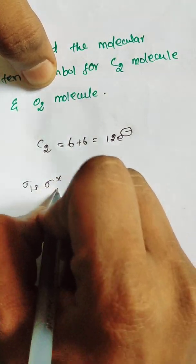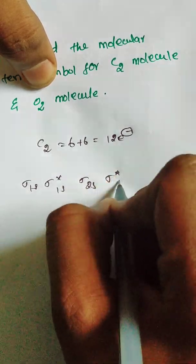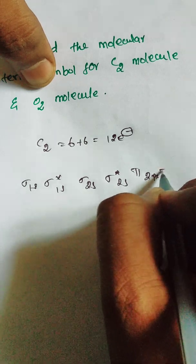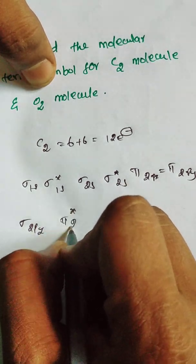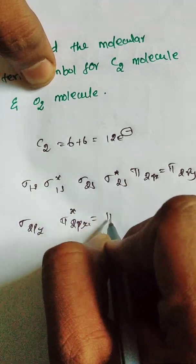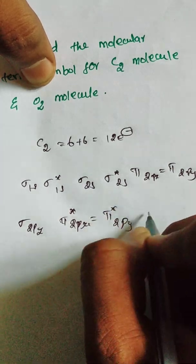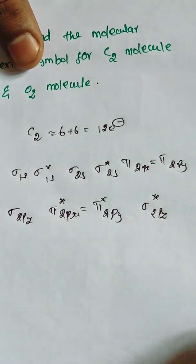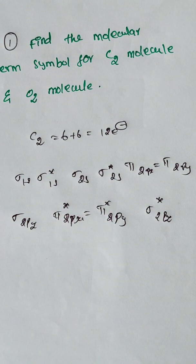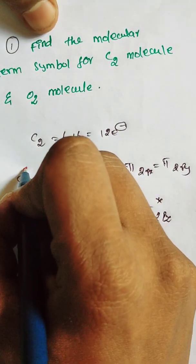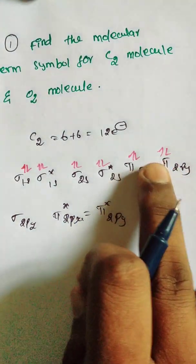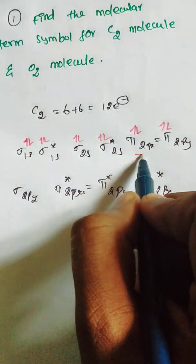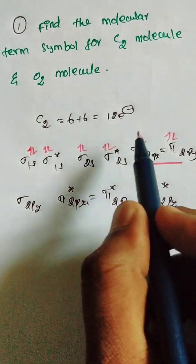The electronic configuration order for C2 is: sigma 1s, sigma* 1s, sigma 2s, sigma* 2s, then pi 2px equal to pi 2py, then sigma 2pz, then pi* 2px equal to pi* 2py, then sigma* 2pz. We fill all 12 electrons into this configuration. The last electrons (11th and 12th) fill into the pi 2px and pi 2py orbitals.